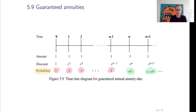Here is the timeline diagram for guaranteed annual annuity dues. The payments are 1 starting at time 0, 1, 1 forever. The discounted values are 1, v to the power 1, v to the power 2, v to the power n minus 1, and so on. The probability that the payments are made is 1 — it is certain that payments will be made at times 0, 1, 2, up to n minus 1. It is only after time n that survival of the insured is involved.